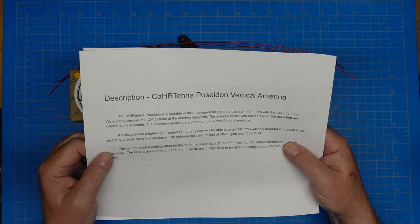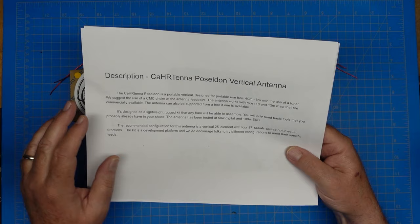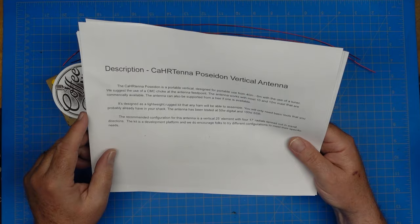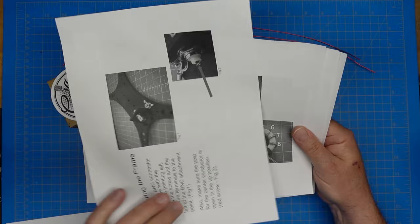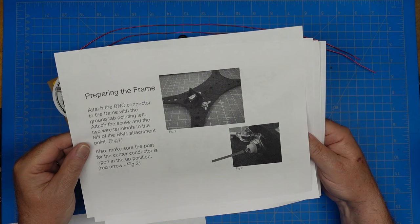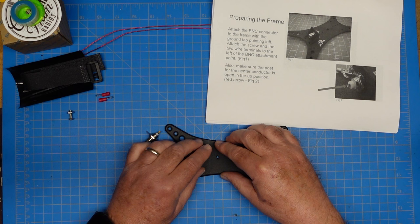This explains what the Cartena is. Our recommended configuration is 25-foot vertical element and four 17-foot radials. With 100 feet of wire, you have enough to do that with a little left over. We include our parts list, then we start the instructions. We're going to follow the instructions exactly.